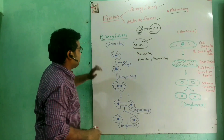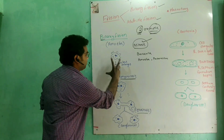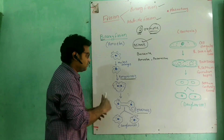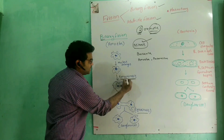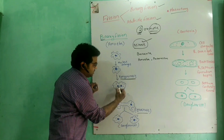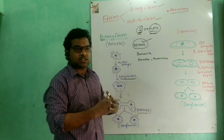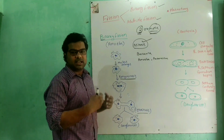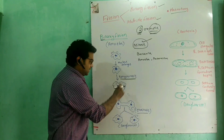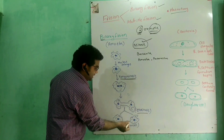In amoeba and paramecium, first the nucleus enlarges, then karyokinesis occurs, meaning nucleus division. The nucleus division is mitosis, which involves spindle fiber formation and stages: prophase, metaphase, anaphase, and telophase — any kind of nucleus division. Then cytokinesis, meaning cytoplasmic division, follows.